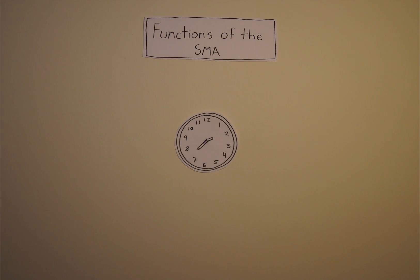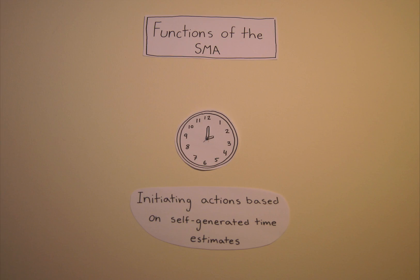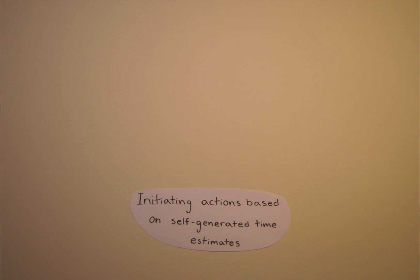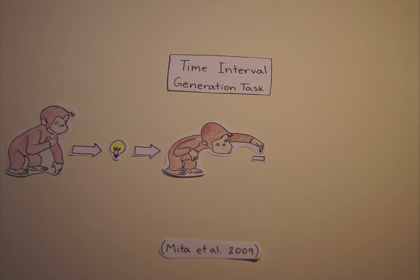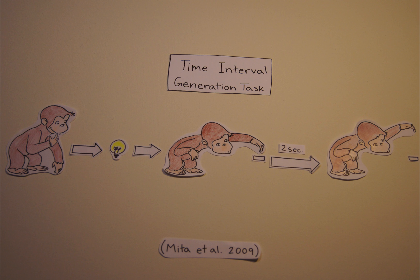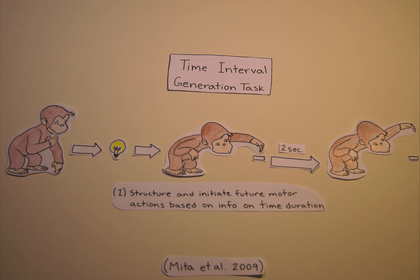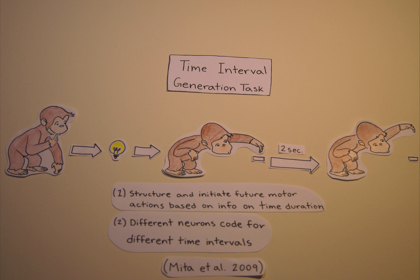Interestingly, the neurons in the pre-SMA may be associated specifically with initiating actions based on self-generated time estimates. For example, Mina et al. trained monkeys to estimate how long to hold down a key depending on the color of light displayed — for instance, a yellow light indicated the monkey should hold the key for two seconds. The results suggested that neurons in the pre-SMA may structure and initiate future motor actions based on information on time duration, and that different neurons in the pre-SMA may code for different time intervals.